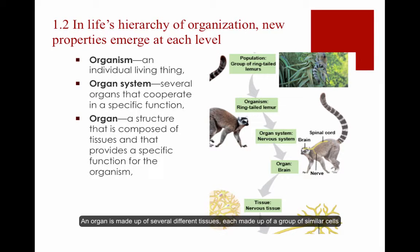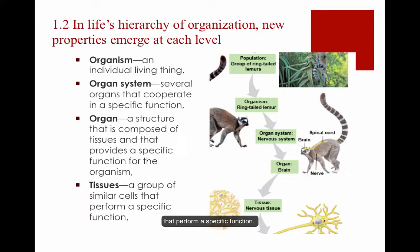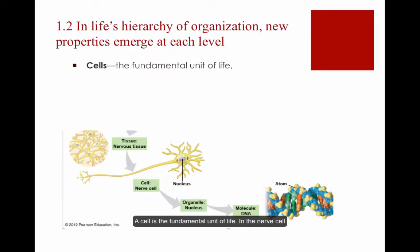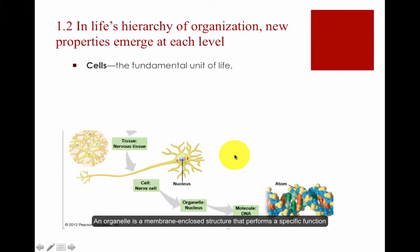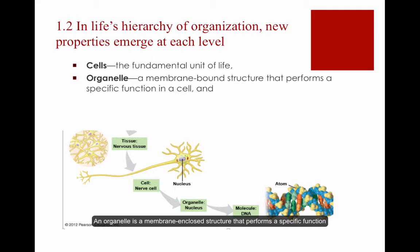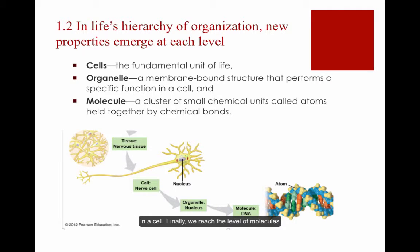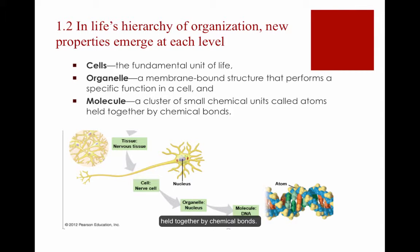An organ is made up of several different tissues, each made up of a group of similar cells that perform a specific function. A cell is the fundamental unit of life. In the nerve cells shown here, you can see several organelles, such as the nucleus. An organelle is a membrane-enclosed structure that performs a specific function in a cell. Finally, we reach the level of molecules in the hierarchy. A molecule is a cluster of small chemical units called atoms held together by chemical bonds.